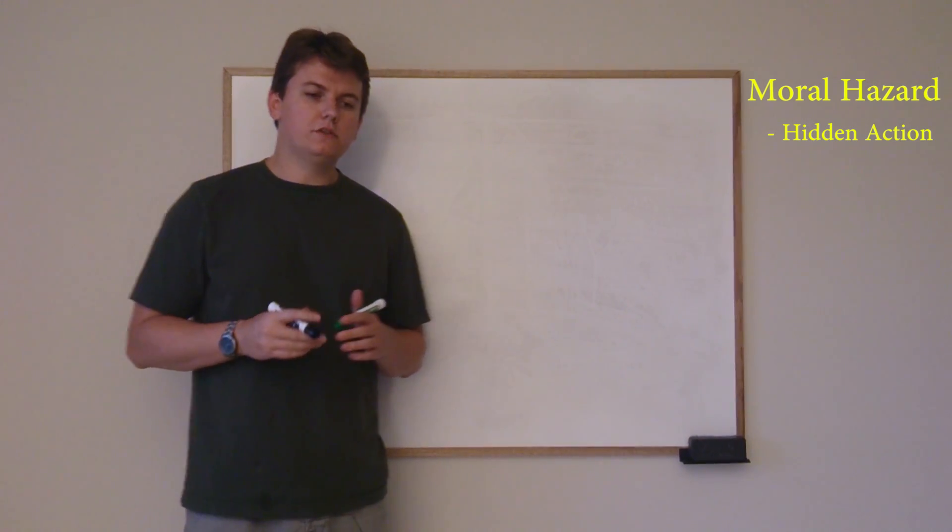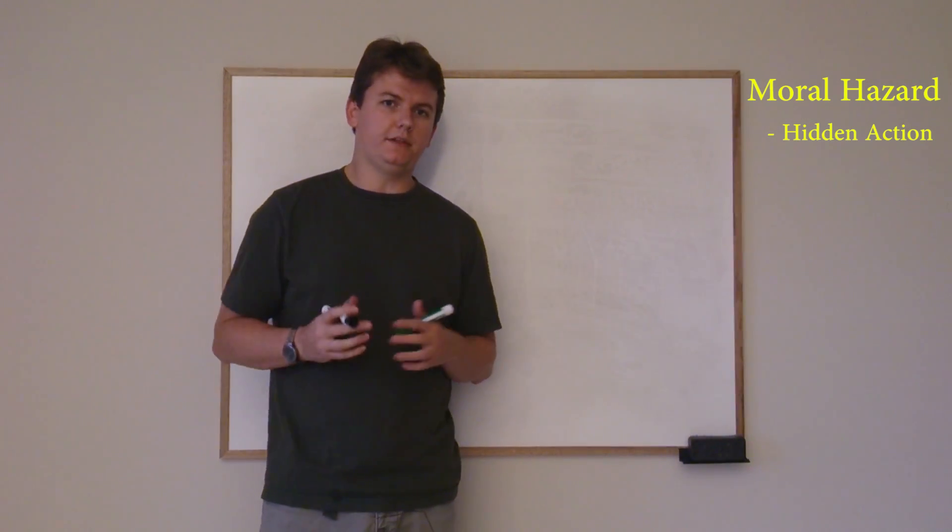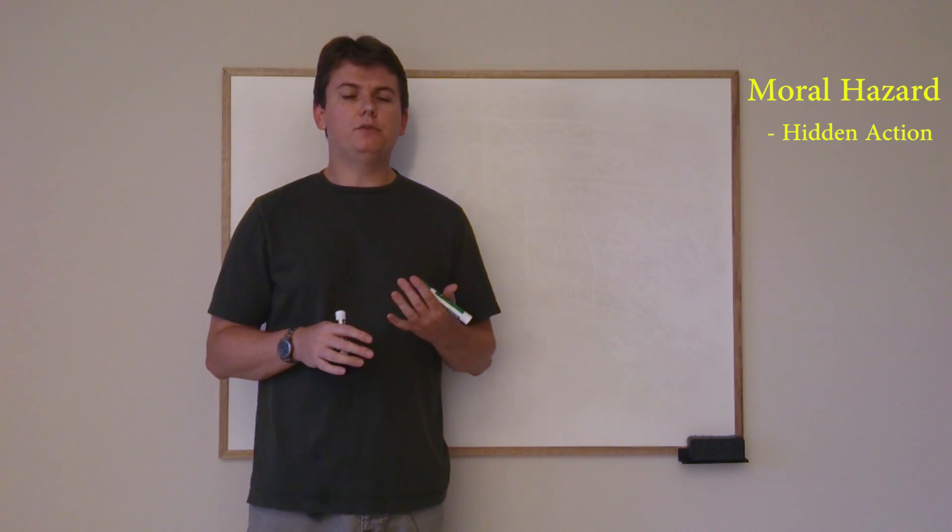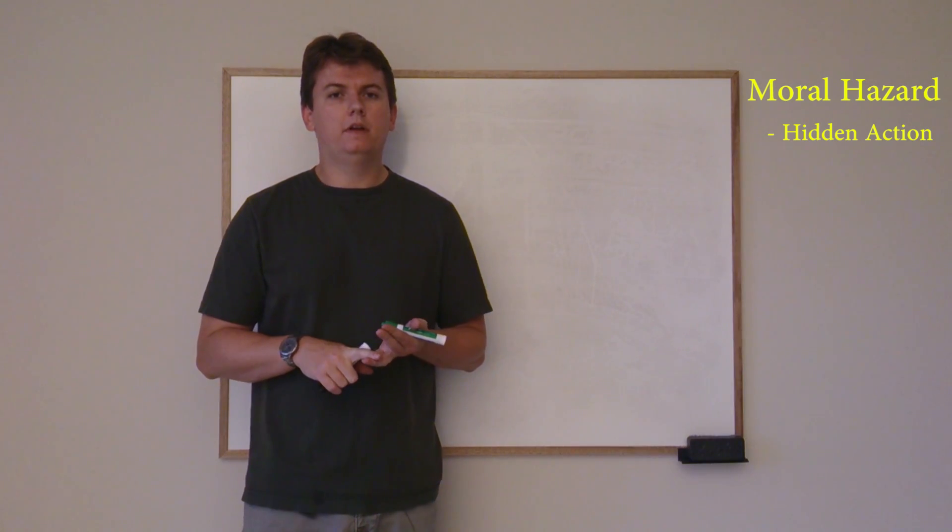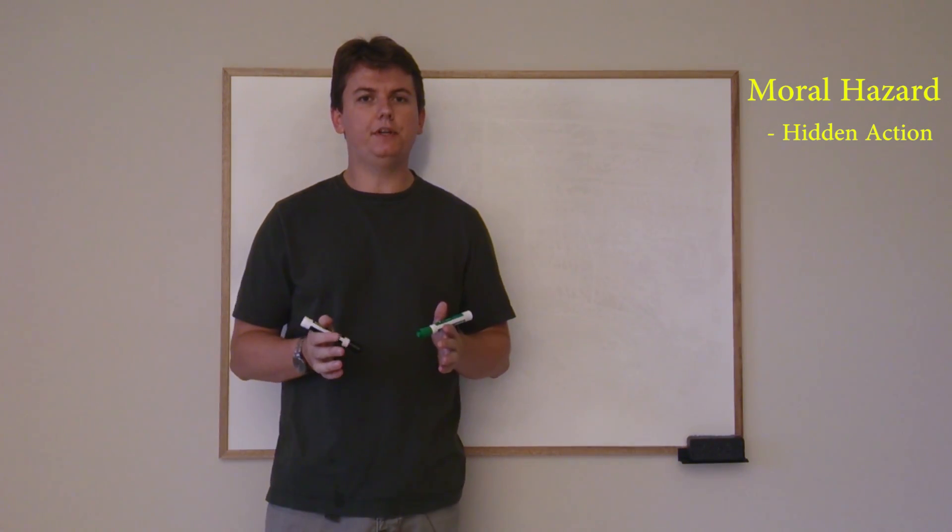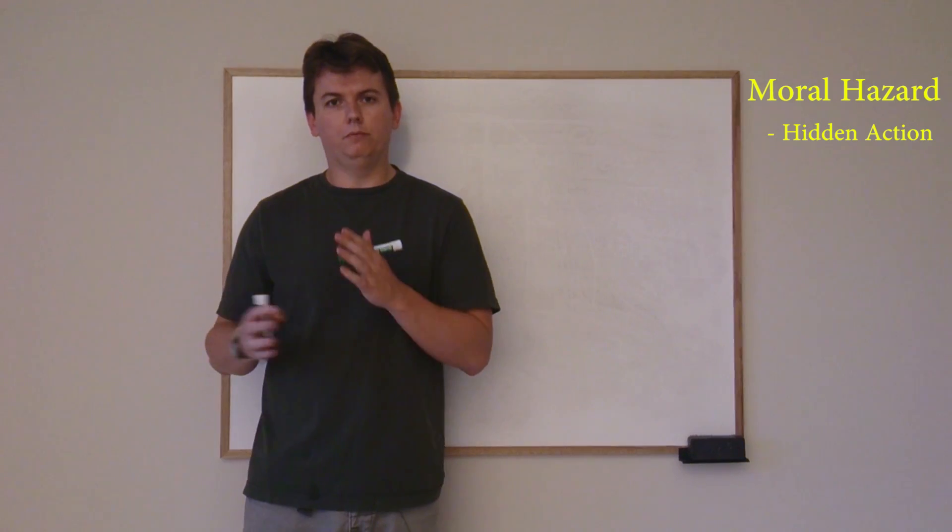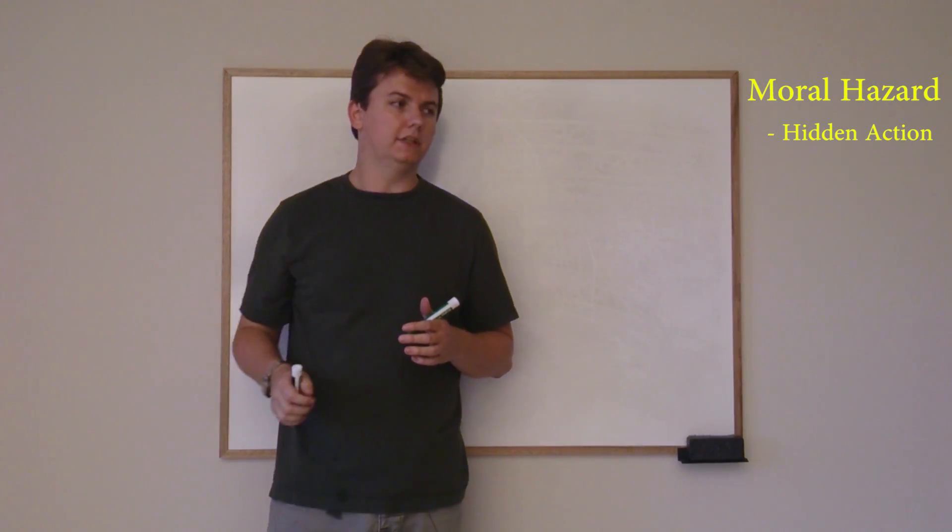Basically in the insurance world, moral hazard arises when the person covered by the insurance has the ability to affect the magnitude and the probability of the payout. So I'm going to give an example here that we'll start in the moral hazard and then we'll eventually be able to convert it to adverse selection.